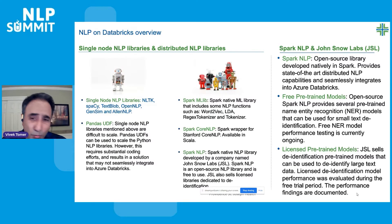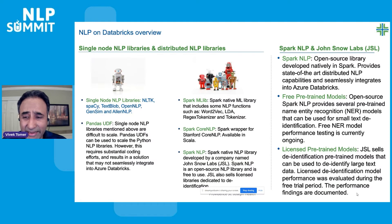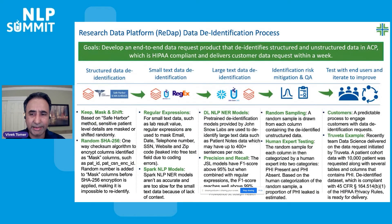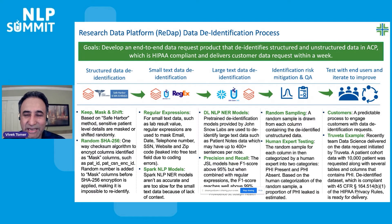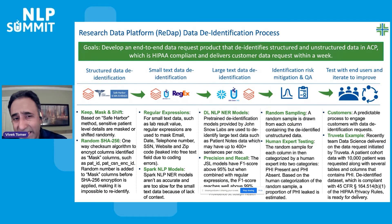We originally looked at some free pre-trained models and worked with John Snow Labs to get a free trial, and we started our process of de-identifying the data. As described, the entire de-identification process has three parts: structured data de-identification, small text de-identification, and large text de-identification. The goal was to develop an end-to-end data request product that de-identifies both structured and unstructured data in our advanced computing platform.